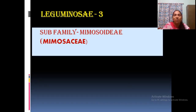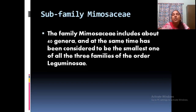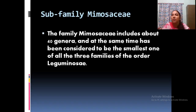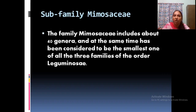Now we are moving on to the third subfamily of Leguminosae, that is Mimosaceae. Subfamily Mimosaceae includes about 40 genera. Some plants are very common in our field also. This family is the smallest subfamily of Leguminosae.